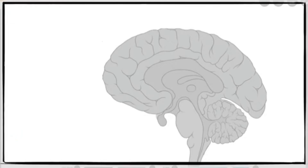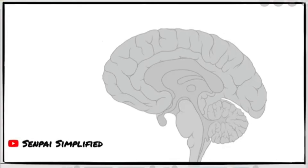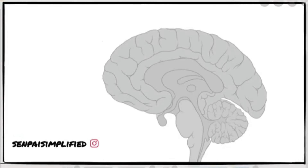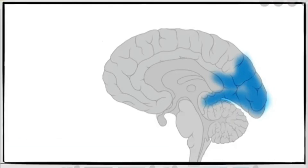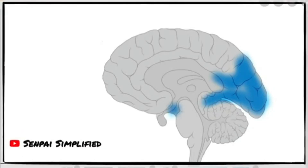Back to the topic of blood supply of the brain in the sagittal section. If you look at the sagittal section of the brain, using blue again for the posterior cerebral artery supply — this whole part of the brain, the occipital lobe, this entire part is supplied, and a part over here, is supplied by the posterior cerebral artery.